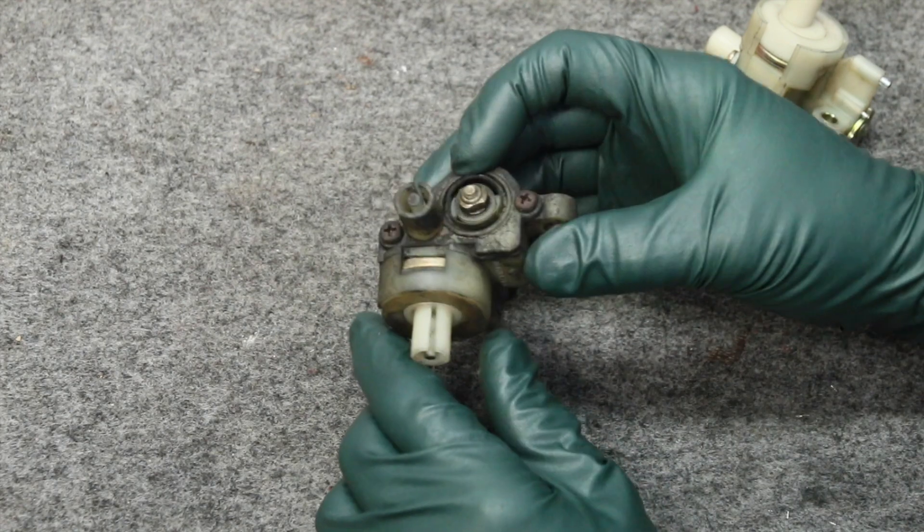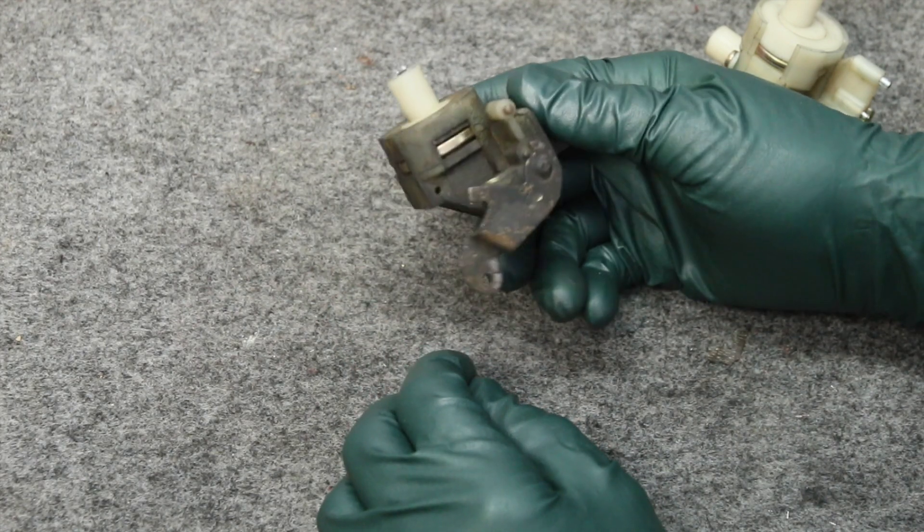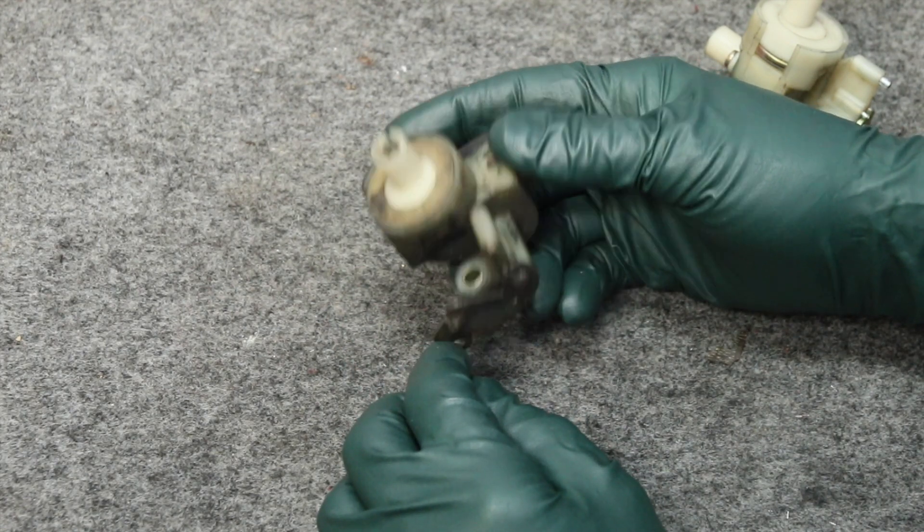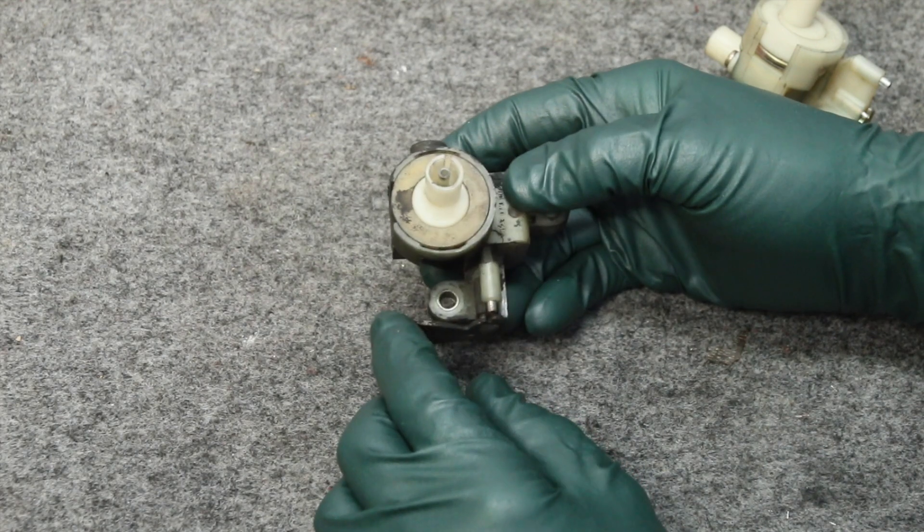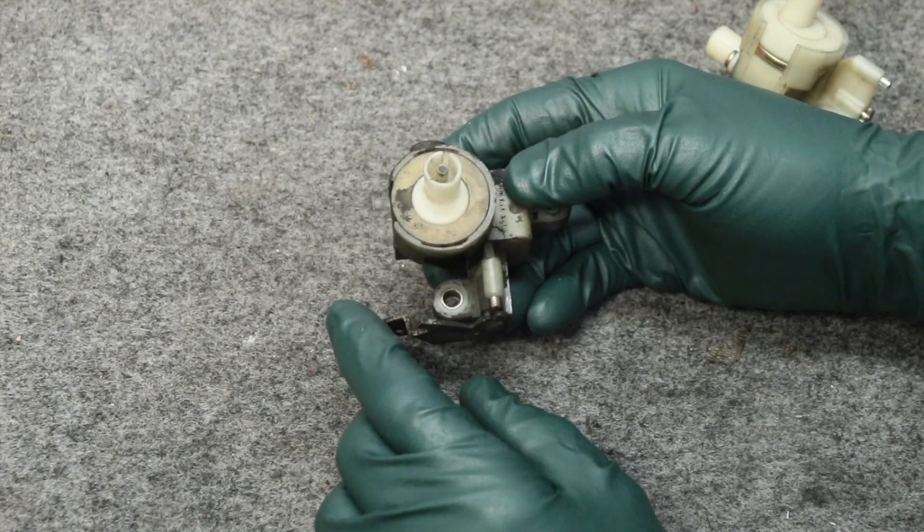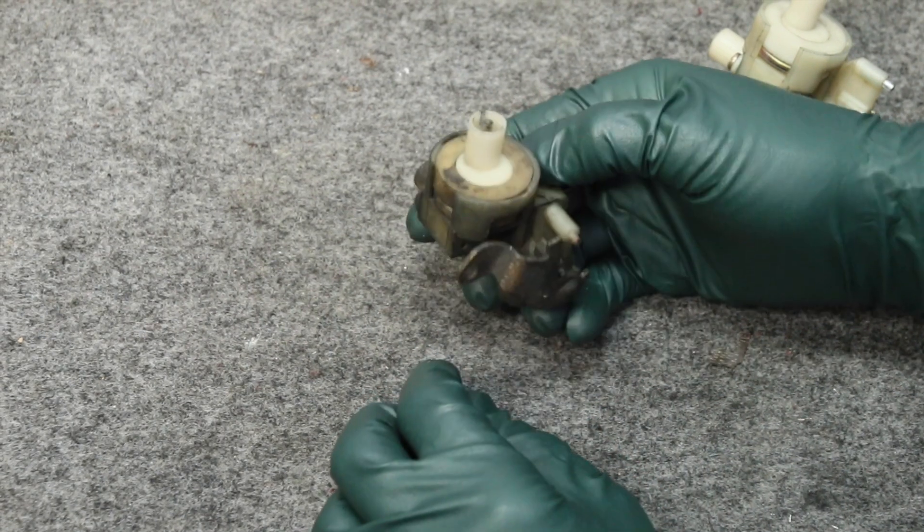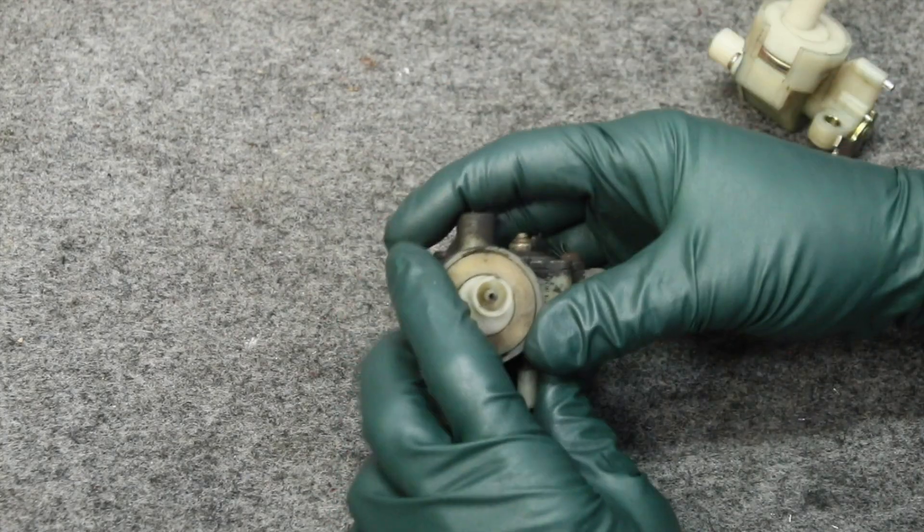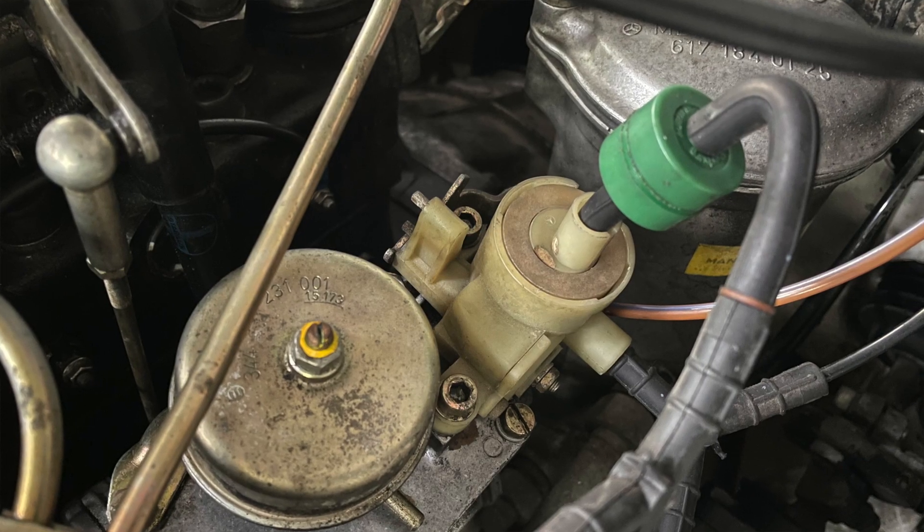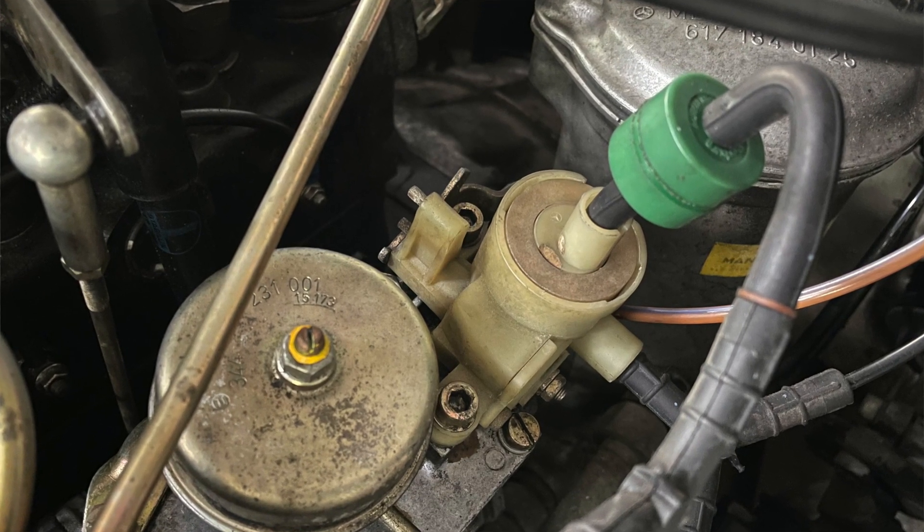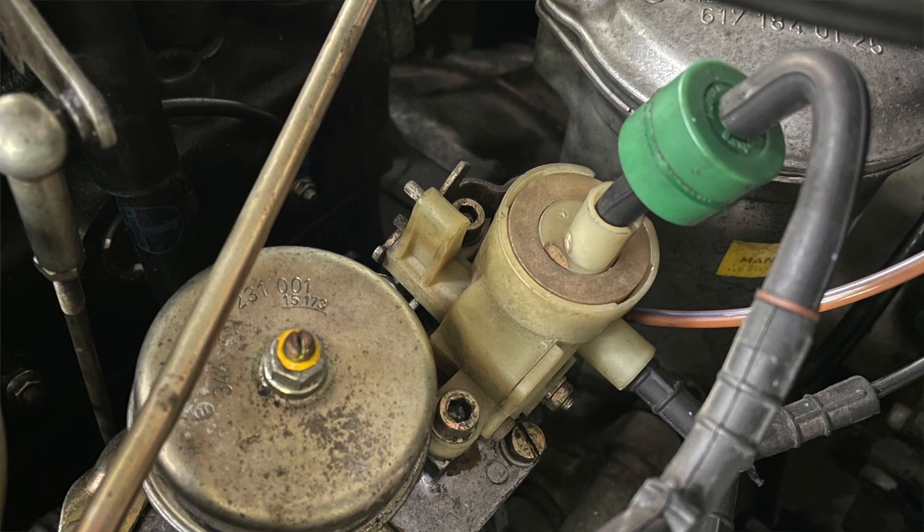I call it the vacuum trickster valve because what it does is it bleeds vacuum off. It doesn't produce vacuum, it takes the vacuum coming from your vacuum pump and routes it in here, and as the lever comes up it bleeds the vacuum off. This sends the signal to your transmission modulator to smooth your shift out or when to shift and so on.